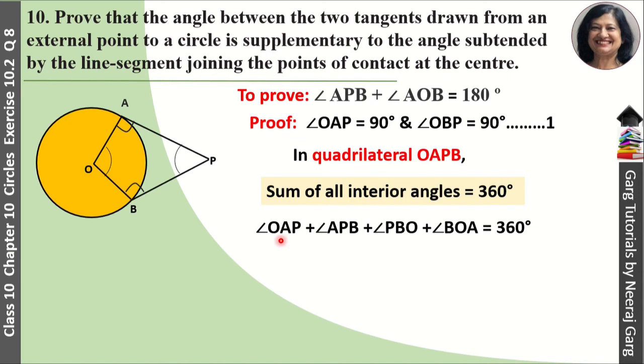Now angle OAP equals 90 degrees and angle OBP equals 90 degrees. So we have 90 degrees plus angle APB plus 90 degrees plus angle BOA equals 360 degrees.